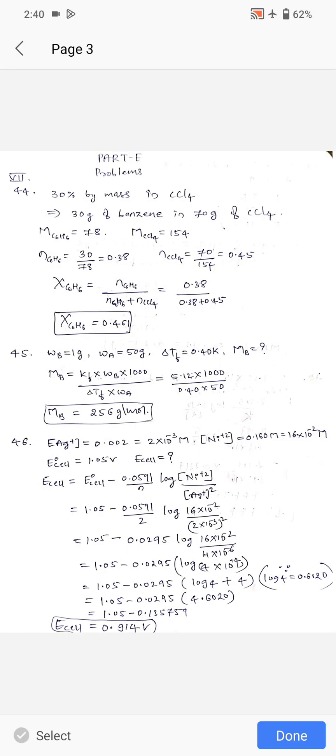Question number 46: concentration of silver plus ion is given, concentration of nickel plus two ion is given, and E not of cell is also given. They asked to calculate E cell, emf of the cell. You know the Nernst equation. Put all the values and simplify it. Log 4 value is 0.6020. Final calculation, you will get E cell equals 0.914 volt.